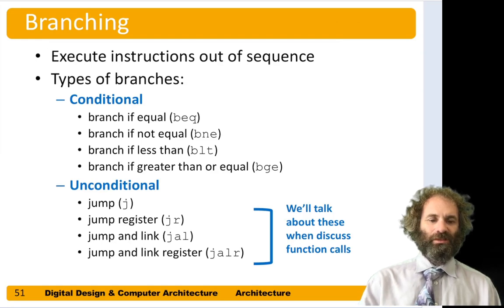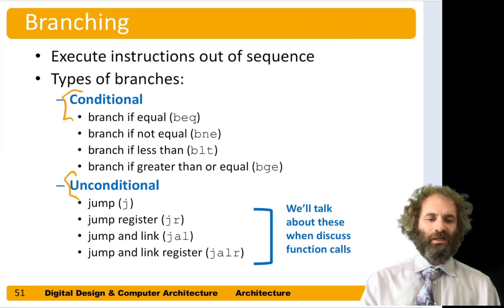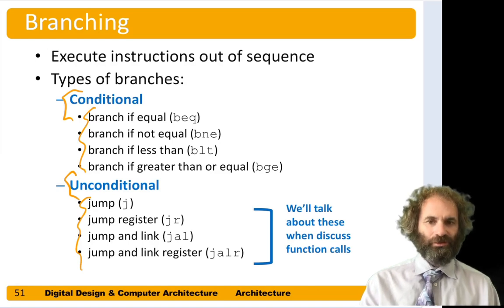There are two types of branches: conditional and unconditional. Conditional branches are known as branch in RISC-V. The unconditional are called jump.